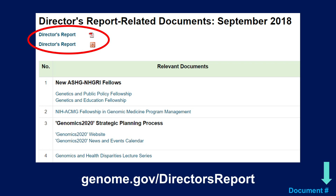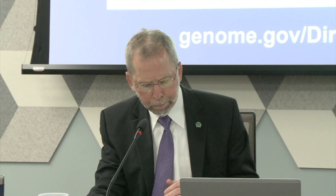Where there are documents or relevant websites associated with a particular slide, you'll find a document number indicated on the bottom right of the slide, which points to material that can be accessed or downloaded from the website shown here. This dedicated website and all associated documents will be archived on genome.gov as a historic record of this meeting.